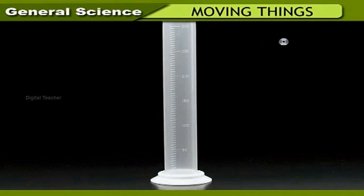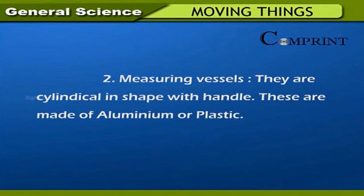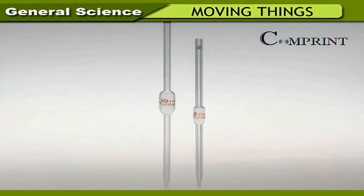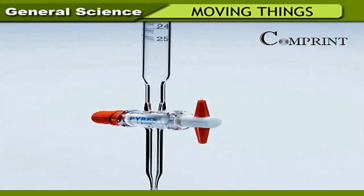Different measuring instruments: a measuring jar is a cylindrical vessel made of glass or plastic used to measure liquids of desired quantity. Measuring jars of 50 ml, 500 ml, and 1000 ml are available for use in laboratories. Measuring vessels are cylindrical in shape with a handle, made of aluminum or plastic. A pipette is a tube-like instrument with a cylindrical bulb in the middle, used in laboratories to take a specific volume of liquid. A burette is also used in laboratories to extract a required volume of liquid; it is made of glass or plastic, and a pinch cock at the bottom is opened to allow liquid to flow from the nozzle.